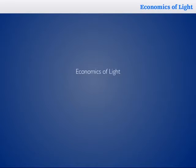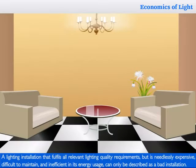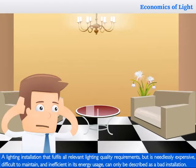In this nugget, we will learn about the economics of light. A lighting installation that fulfills all relevant lighting quality requirements, but is needlessly expensive, difficult to maintain, and inefficient in its energy usage, can only be described as a bad installation.